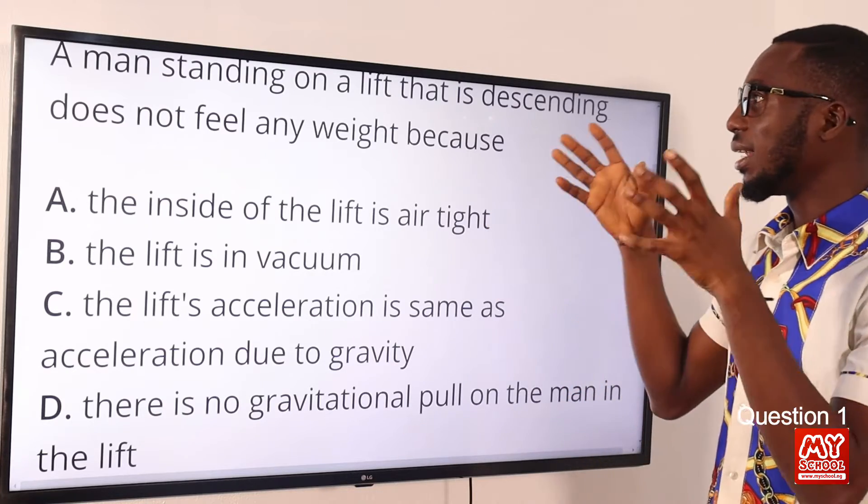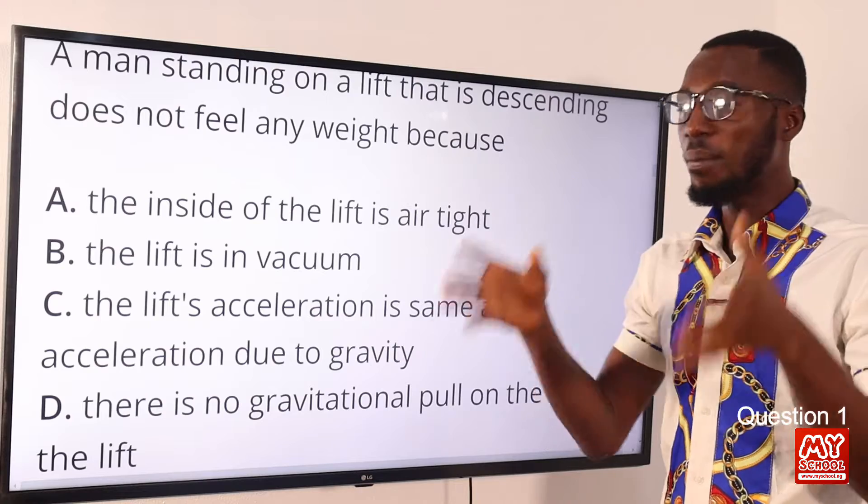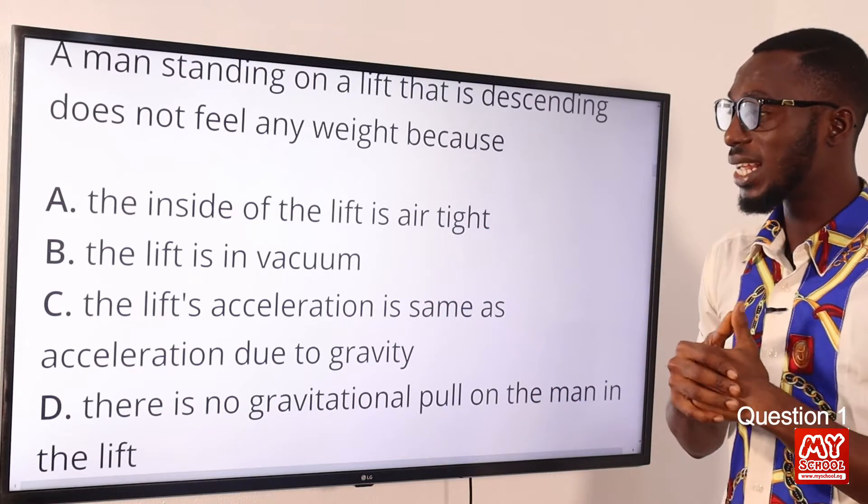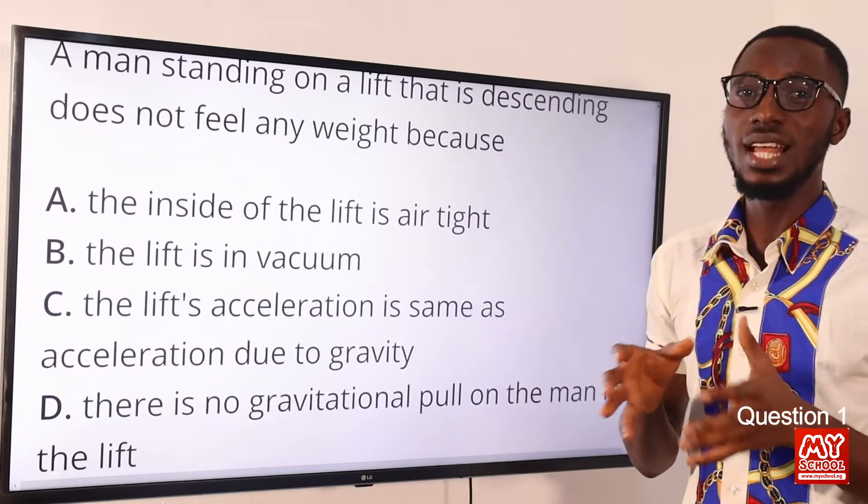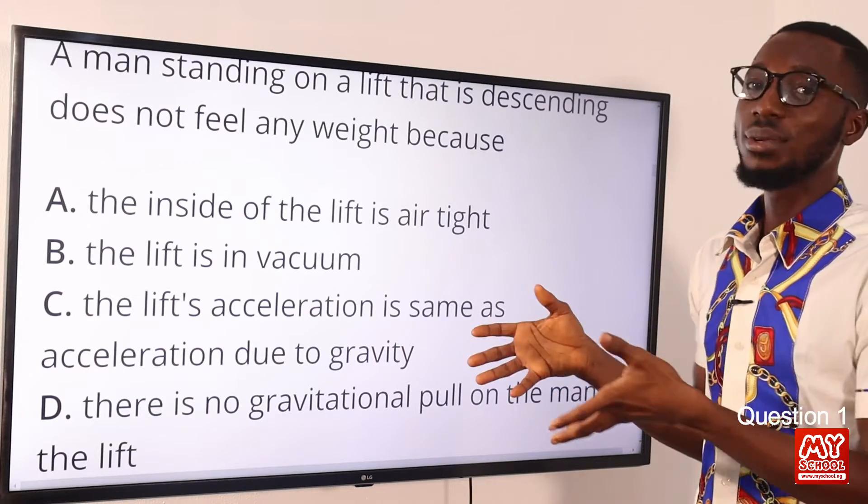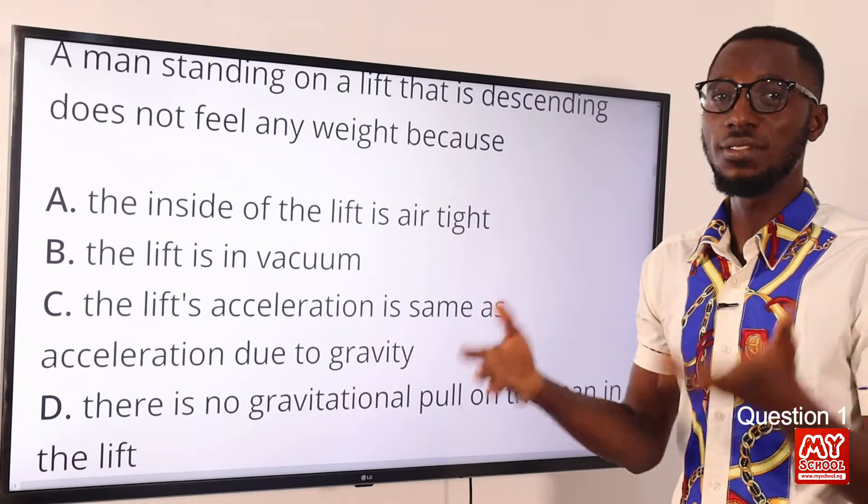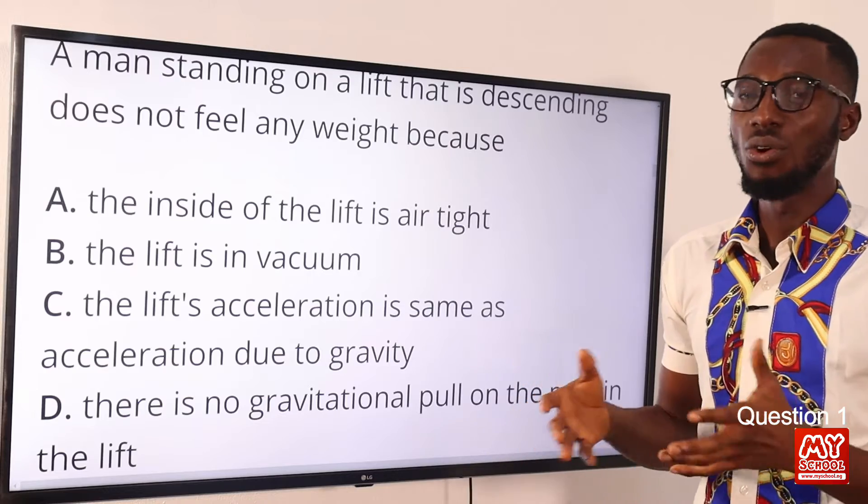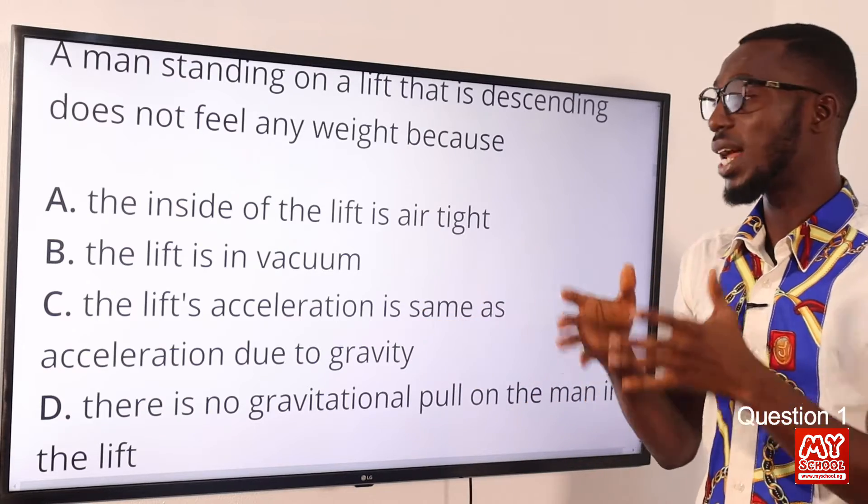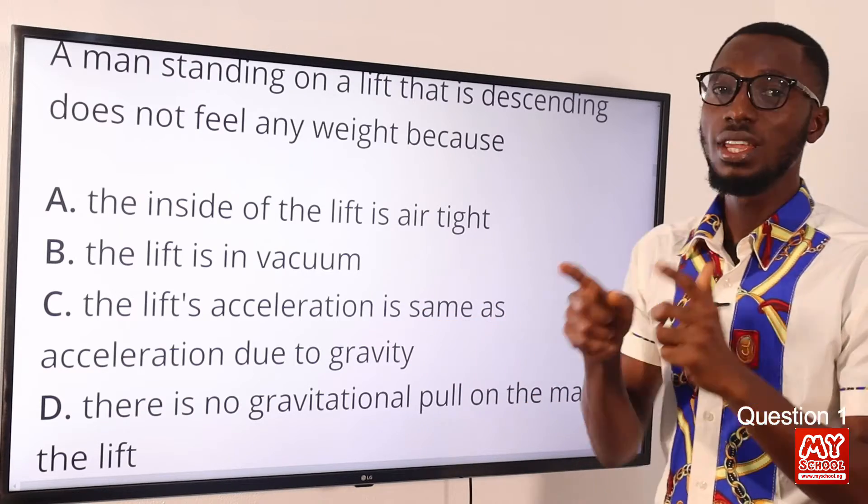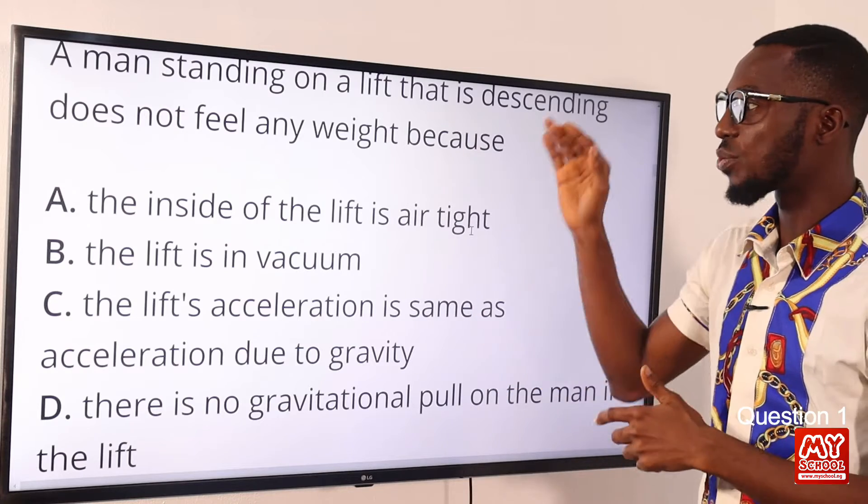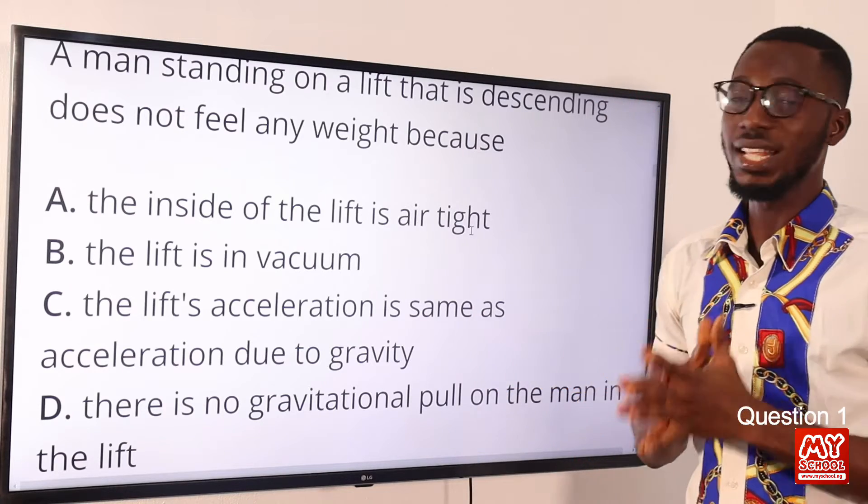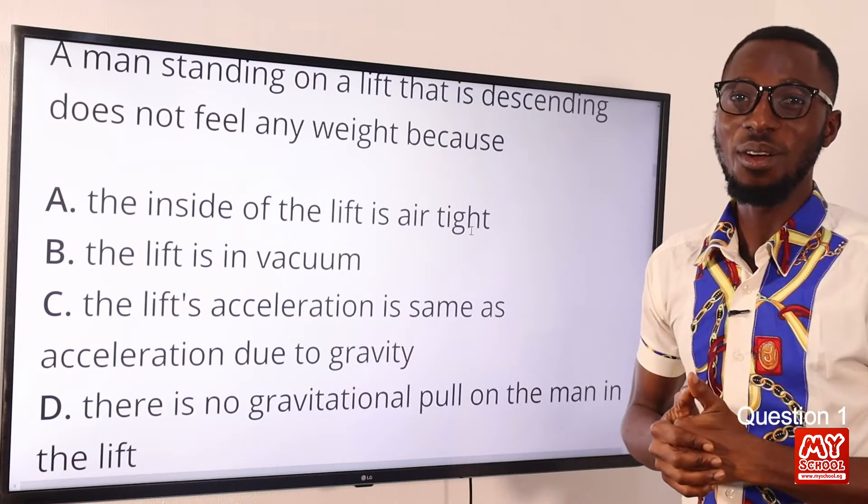A man in a lift that is descending or in an aeroplane feels this weightlessness because the acceleration of the lift equals the acceleration due to gravity. So where R stands for the reaction on his feet or on the feet of the man from the lift, that equals 0. Since G equals A, acceleration of the lift equals acceleration due to gravity. So this is why the man feels weightlessness. Option C is the correct option.